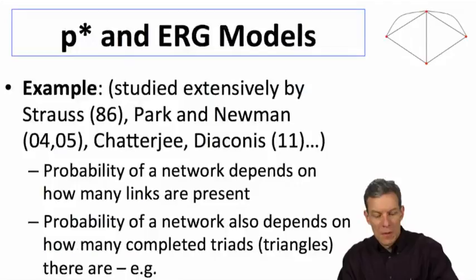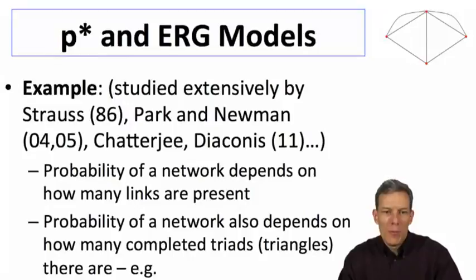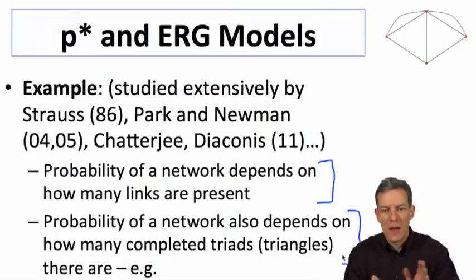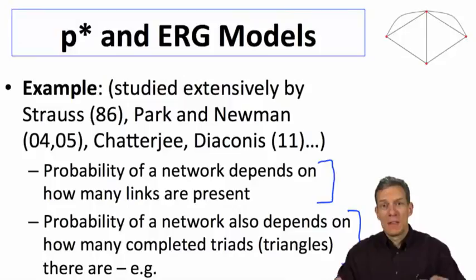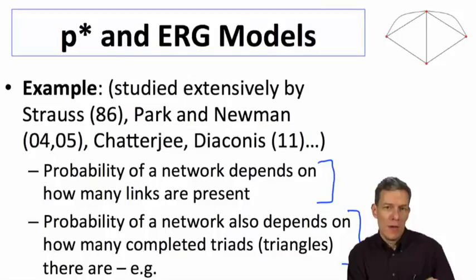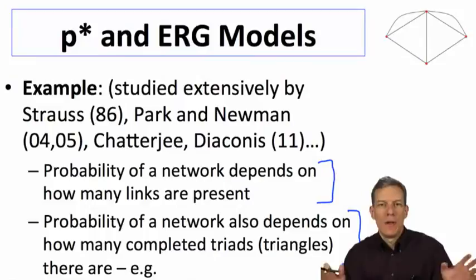Let's start by looking at a simple example of this that's been studied fairly extensively in the literature by Strauss originally, and Park and Newman, Chatterjee and Diaconis have looked at it. The idea is that we'll allow the probability of a network to depend on how many links are present, but we also want to make sure we allow for some clustering. In particular, the probability of a network will depend on how many triangles there are. A network that has the same number of links but a different number of triangles could be more or less likely than one that has more or fewer triangles. Triangles could be either favored by the model or not, depending on the particulars.